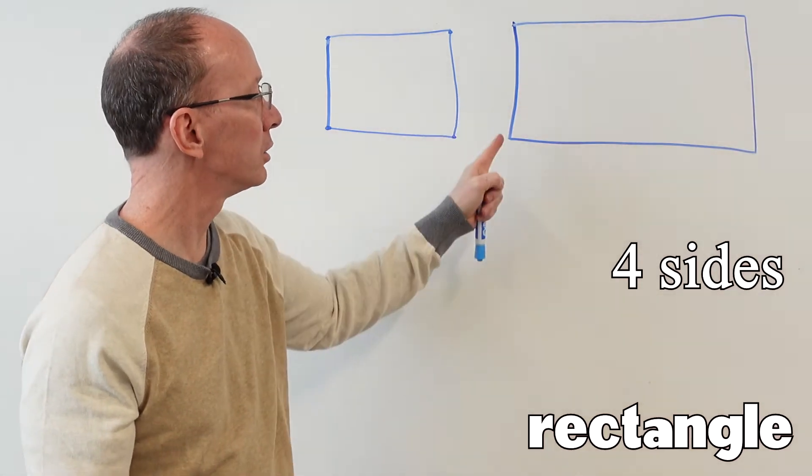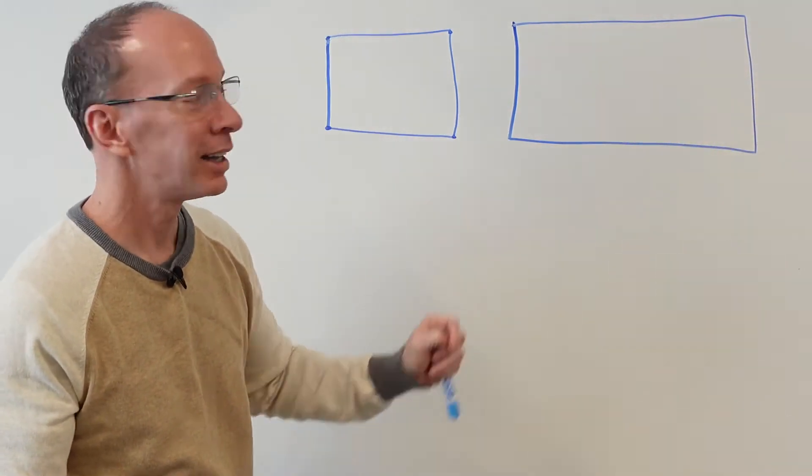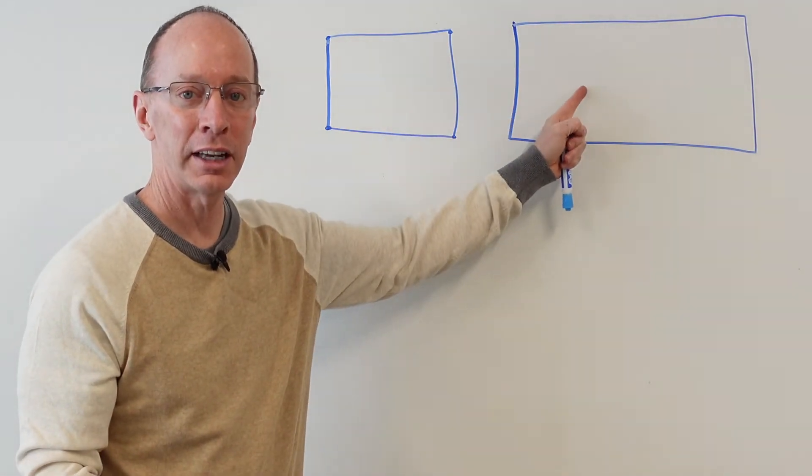and it has one, two, three, four vertices. This is a square, and this is a rectangle.